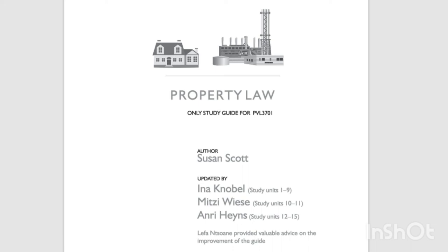Another classification according to the nature of things is that of movable and immovable things. In principle, immovable things consist of land and everything that is permanently attached to land, including natural attachments like plants and artificial fixtures like buildings and structures that are permanently attached to land. Movable things are things that can be moved from one place to another without being damaged or losing their identity — for example, a chair, a car, a shirt, and money.